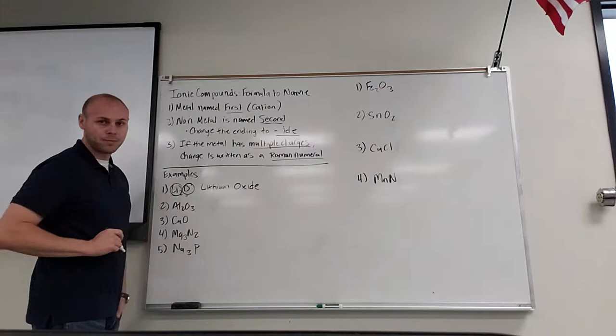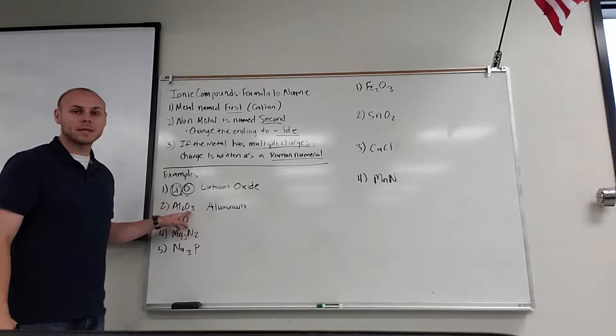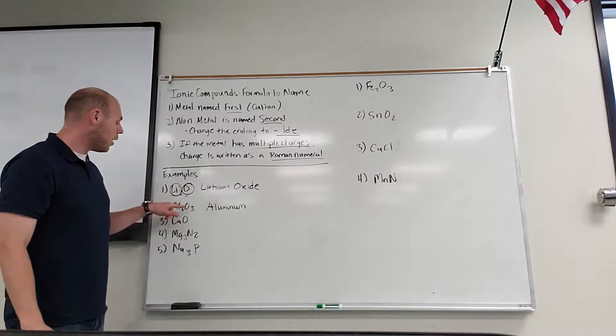Let's do number two: Al₂O₃. Al itself is aluminum. And as we already know, O represents oxygen. It doesn't matter about the subscript — it just matters what the name of that particular ion is. O is oxygen; we change the ending to "-ide". It becomes aluminum oxide.